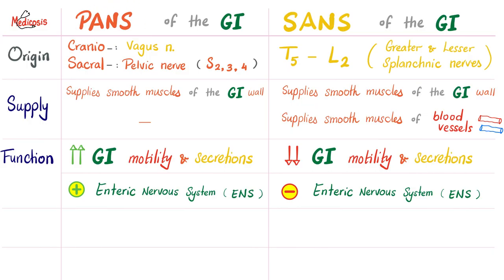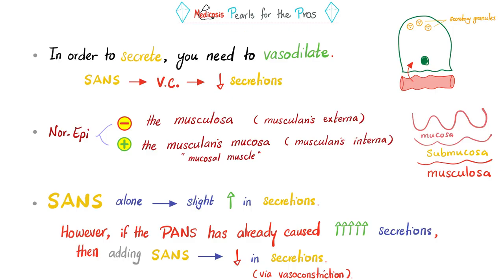Parasympathetic fibers supply smooth muscles of the gut wall to increase motility and secretions. Sympathetic supplies smooth muscles and blood vessel walls. Parasympathetic rarely supplies blood vessels. Parasympathetic boosts motility and secretions by stimulating the enteric nervous system; sympathetic decreases motility and secretions and inhibits the enteric nervous system. A key pearl: in order to secrete, you need to vasodilate first. The secretory cell needs raw materials from blood — so more blood flow means more secretion.